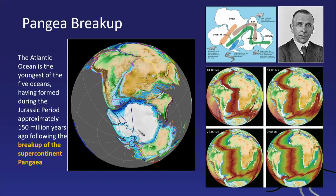Wegener actually died on an expedition in Greenland, and by the time he died, his theory was still not widely accepted. Only in the 1960s, when people realized there are magnetic anomalies on the ocean floor that mark changes in the ocean floor, did the theory get widely accepted.